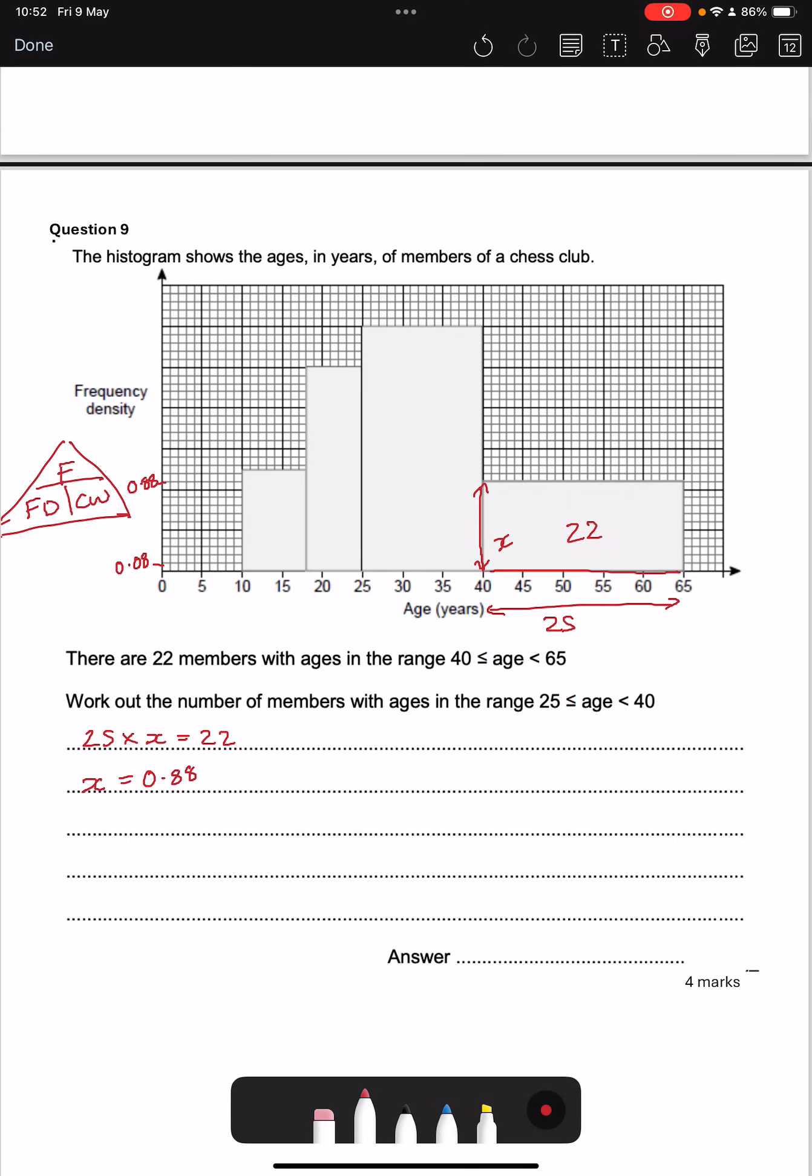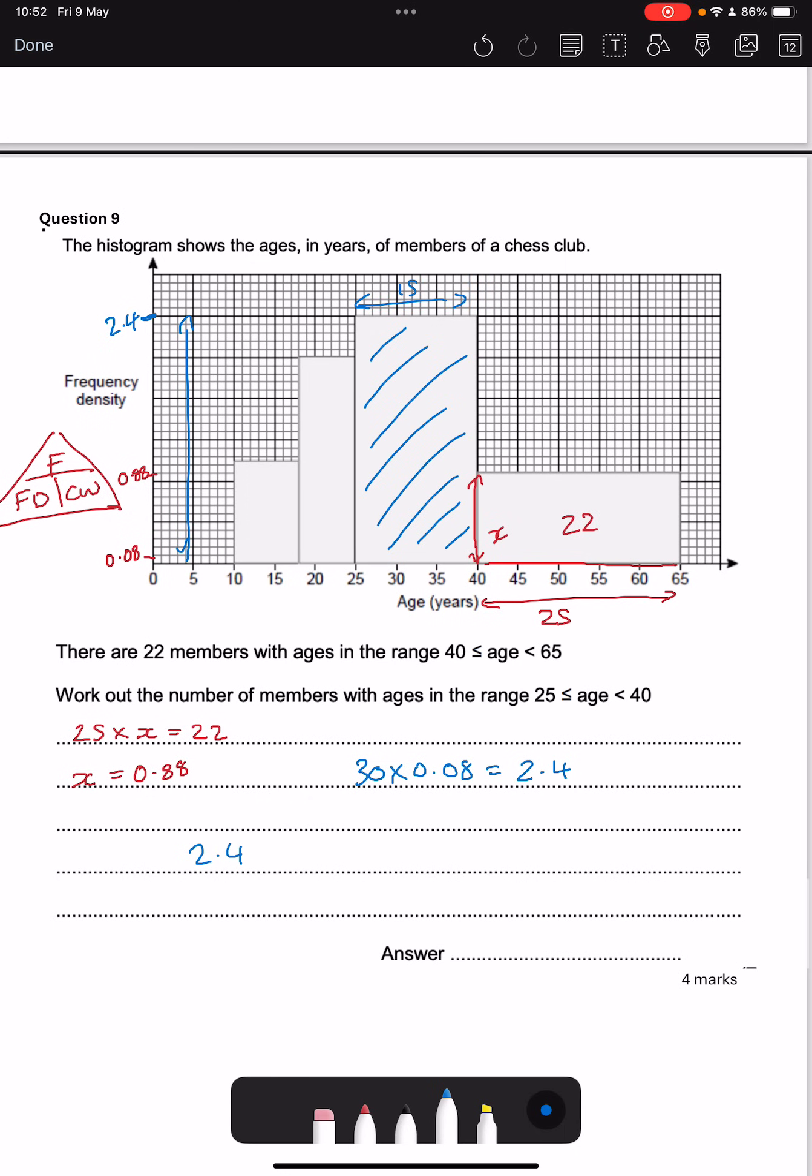But it's asking me for the number of members with the age range of 25 to 40. So I want to know the area of this bar. So let's count how many little squares have we got. 5, 10, 15, 20, 25, 30. Each little square was 0.08 so times that and that gives me 2.4. So I've got a rectangle with a height of 2.4 and a width of 15. So the area is going to be 36.